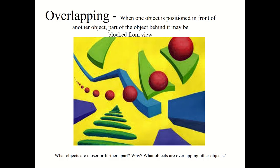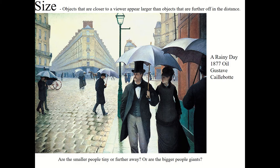Overlapping — when objects are positioned in front of another, the overlapping object is in front of the one behind it. Size refers to the fact that objects that are bigger tend to be closer to us. Rainy Day in Paris by Gustave Caillebotte is a good example — these characters in front are more detailed and bigger than the subjects further back. Notice that the heads of the people tend to be somewhere in the middle, implying that objects' heads should be around the same plane, somewhere along the horizontal line.